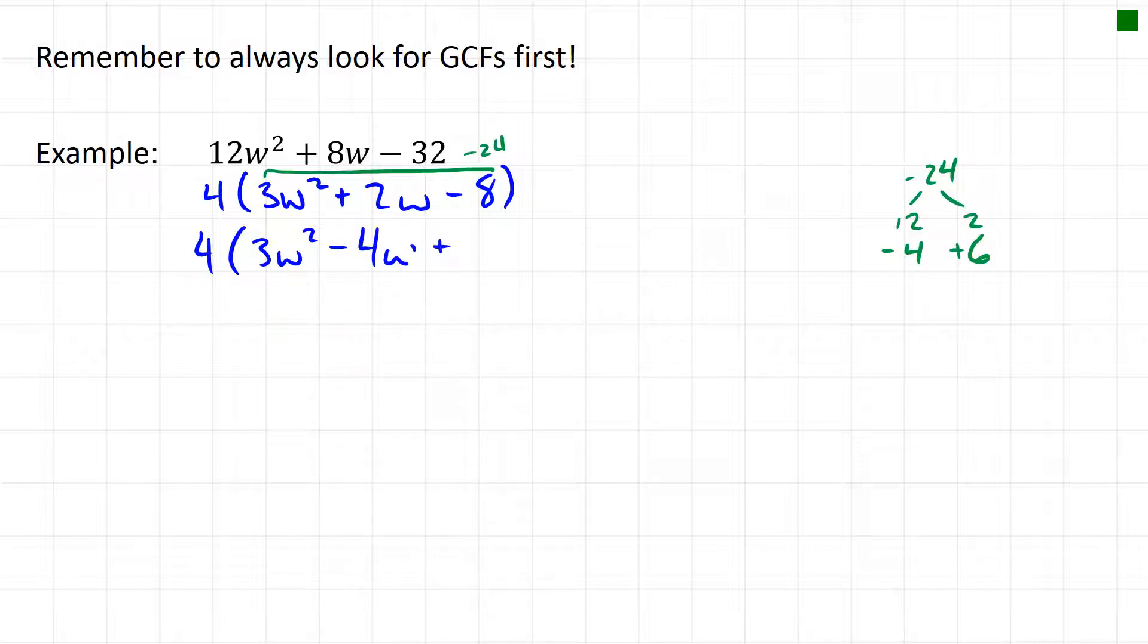Now we're just continuing this messy trinomial process but within these brackets because we have this factor of 4 outside. So now I factor by grouping. This first group has only a w in common, so that would be w times 3w minus 4. And in the second grouping I have 2, so I'll do 2 times 3w minus 4. Perfect, now I have my common binomials, so that's 3w minus 4 and w plus 2.